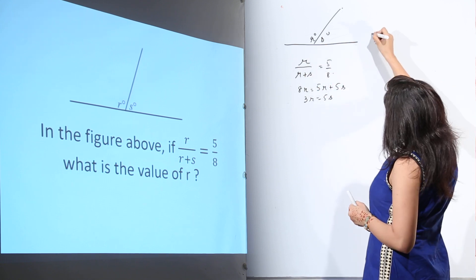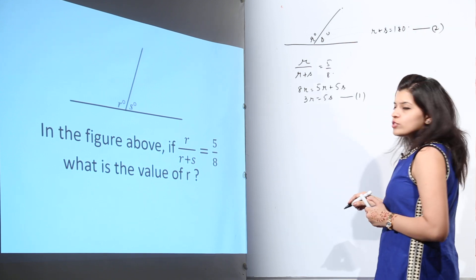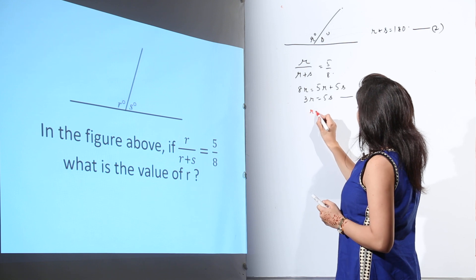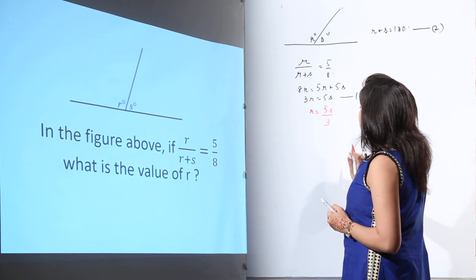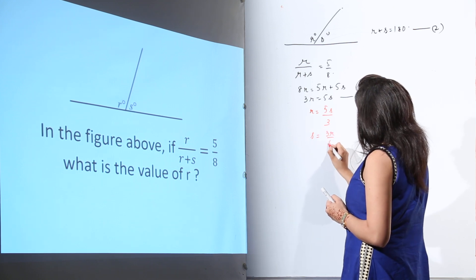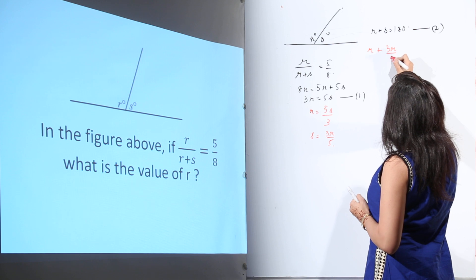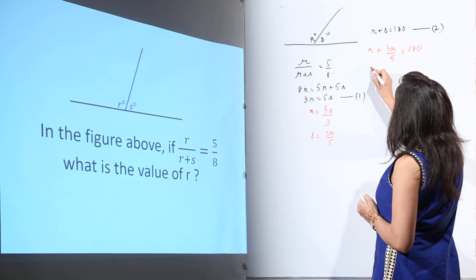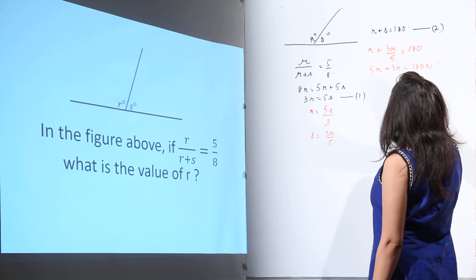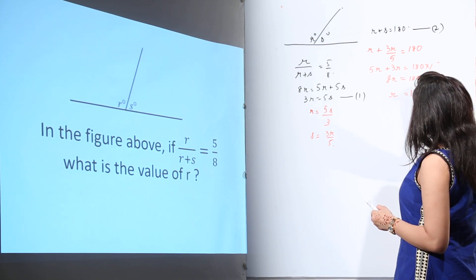We can also say that r + s = 180 degrees. This forms our second equation, and 3r = 5s is our first equation. From equation 1, r = 5s/3, so s = 3r/5. Substituting into the second equation: r + 3r/5 = 180. Solving: 5r + 3r = 180 × 5, so 8r = 900, giving r = 112.5.